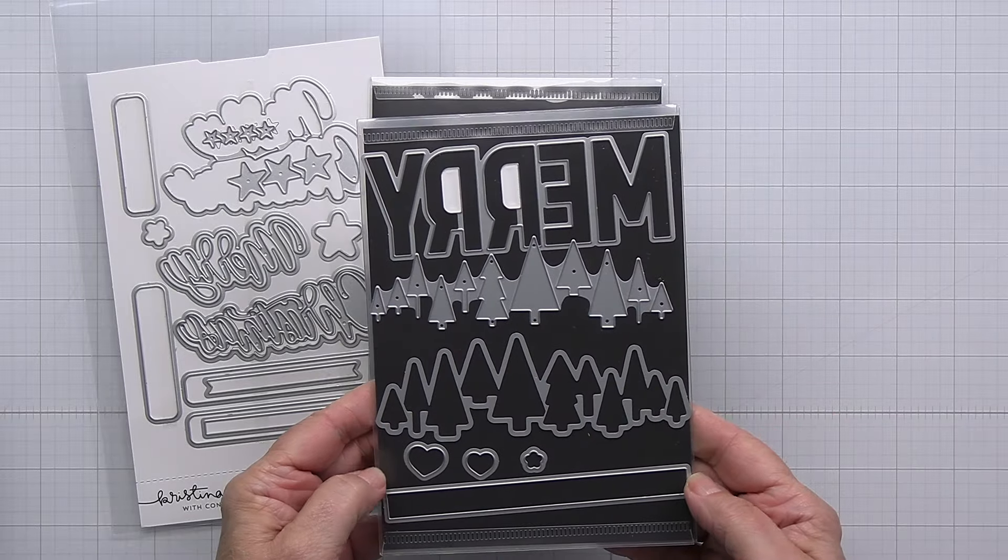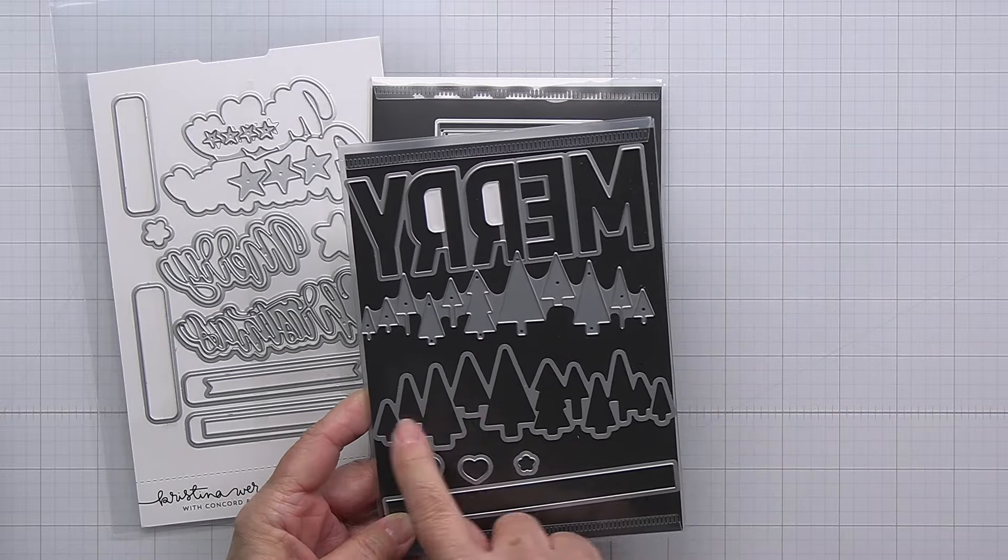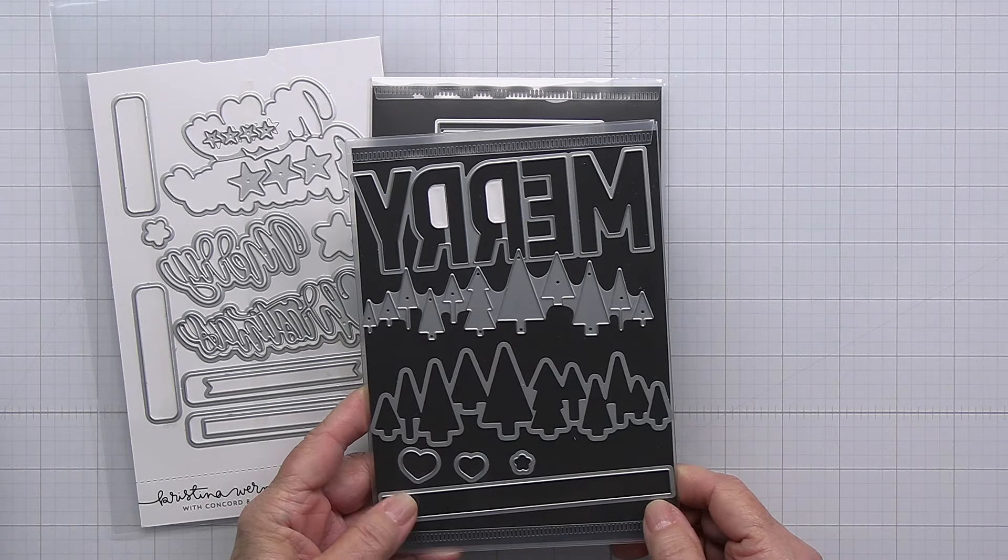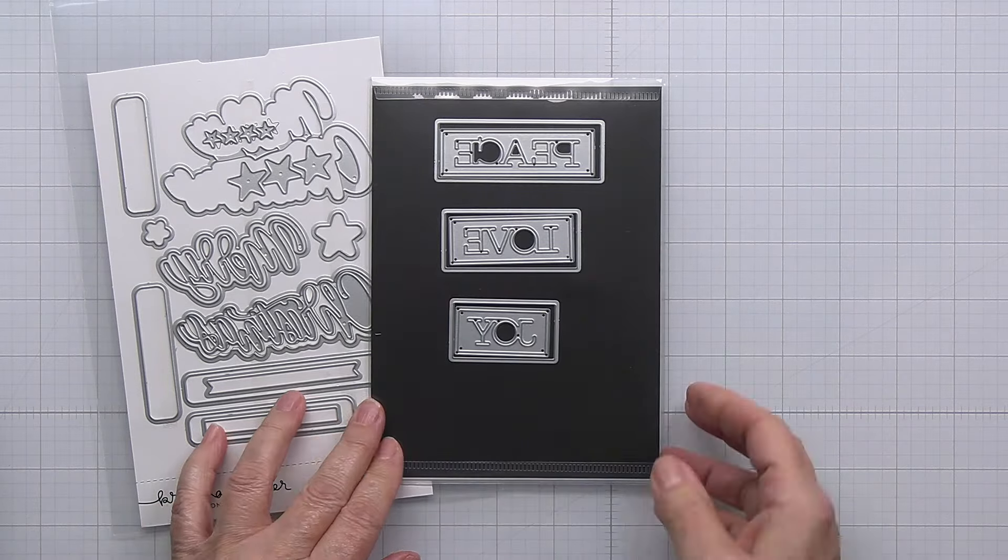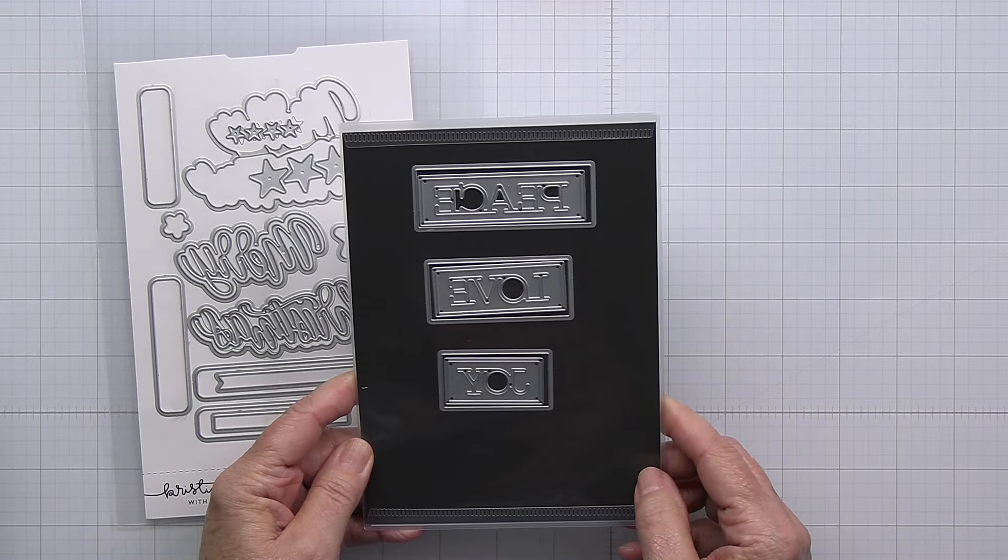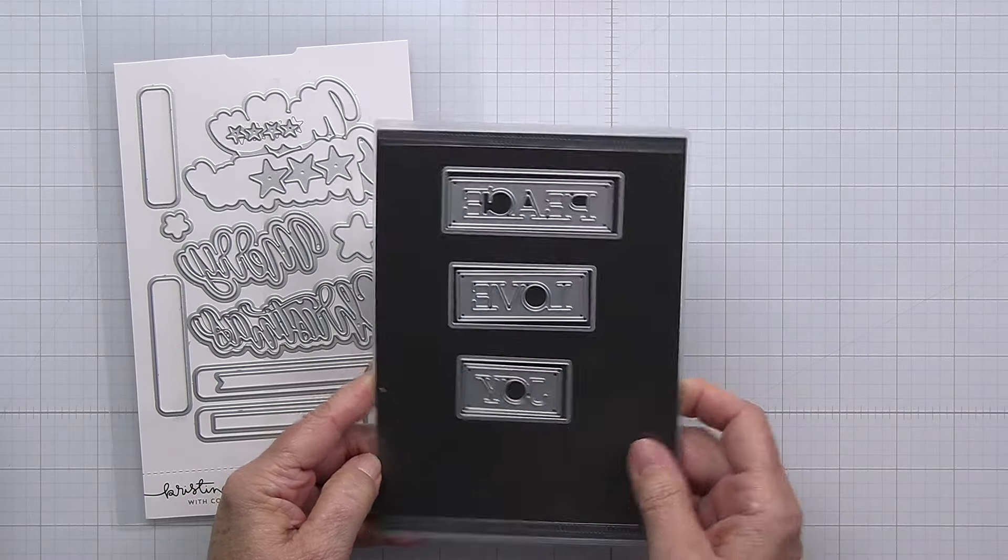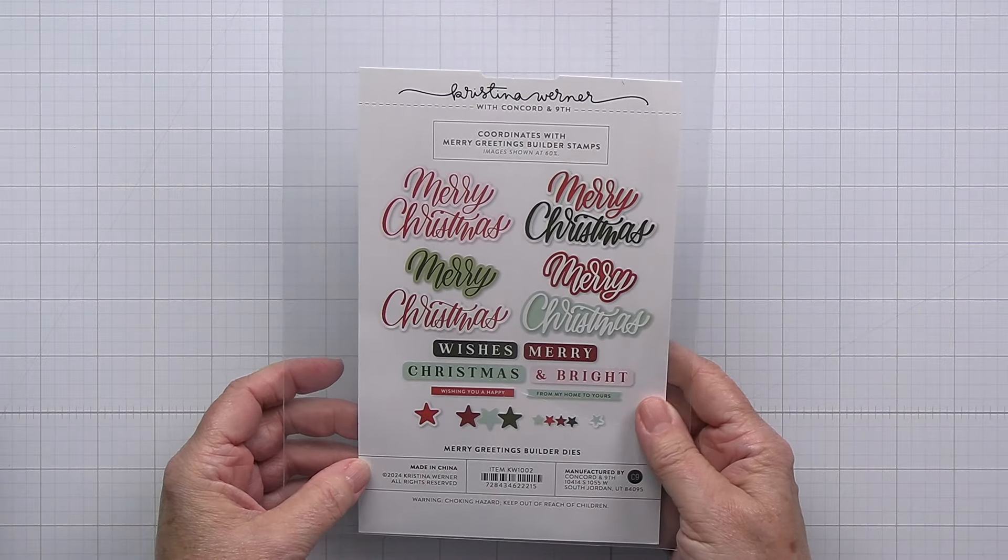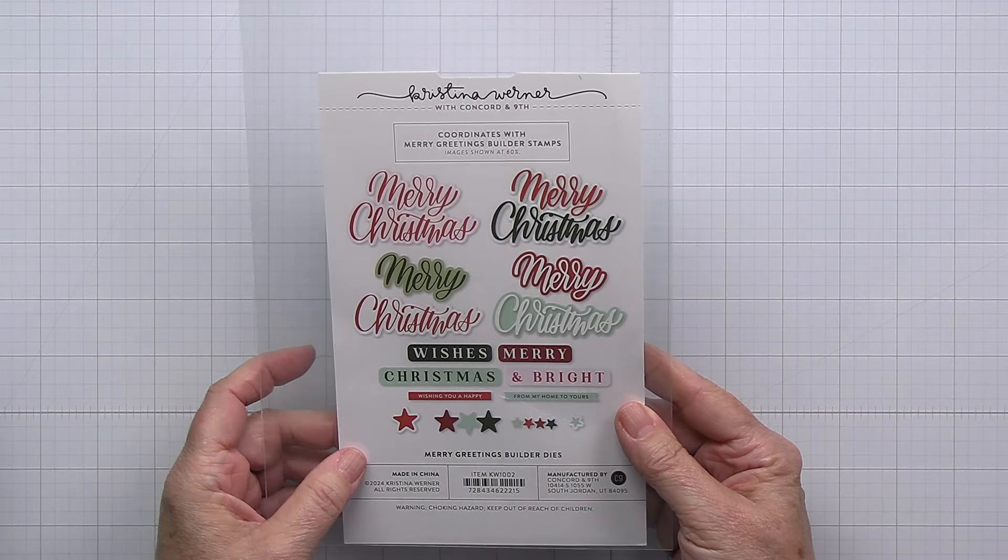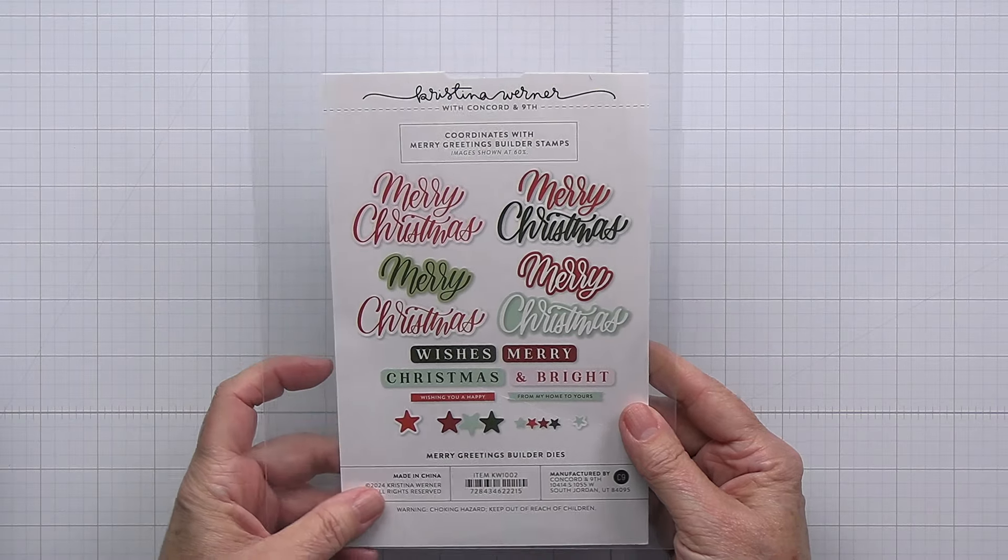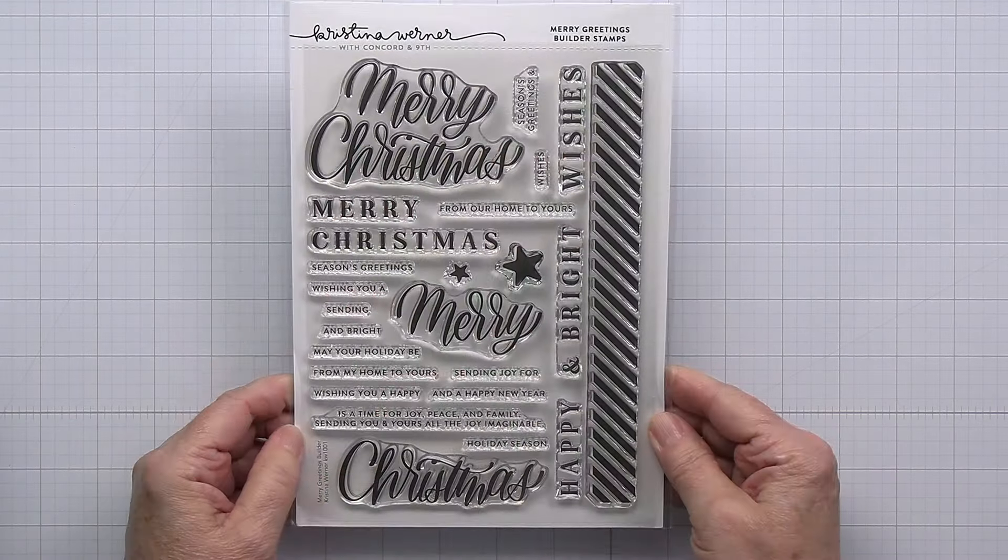I'm going to be using a combination of the Merry Tree dies. This is a die set that you can see here. There is a coordinating stamp for some of these and I'll show you those in a little bit. I'm also going to use the Peace Love Joy frame dies and I'm going to be using the Merry Greetings dies as well. I'm just going to use the stars on this die set but look at the beautiful greetings, all of the gorgeous things that you can create with these sets from Christina and Concord & 9th. They are absolutely stunning.